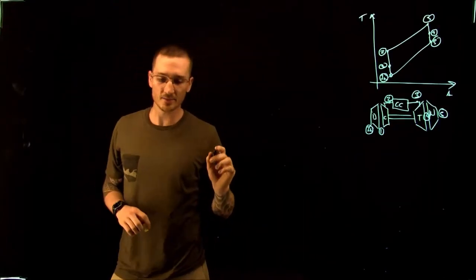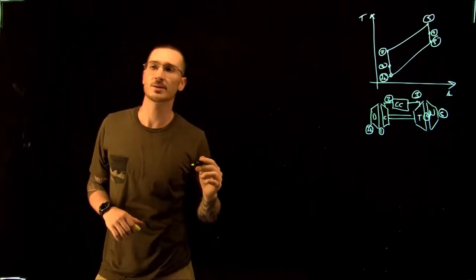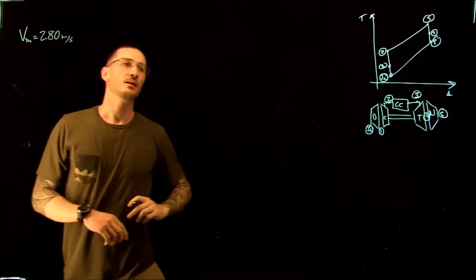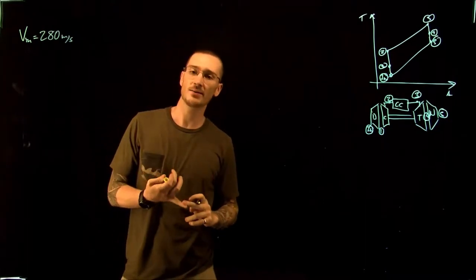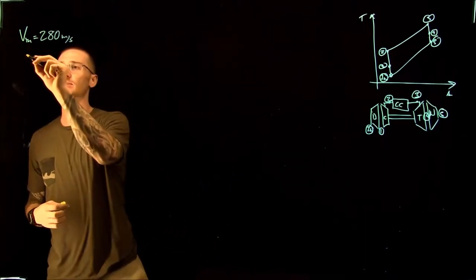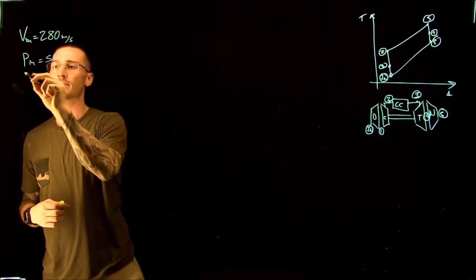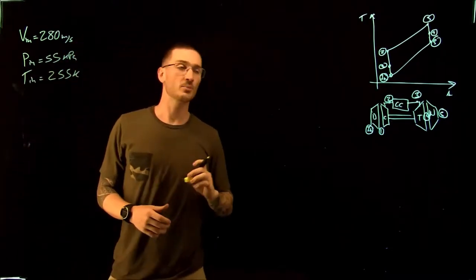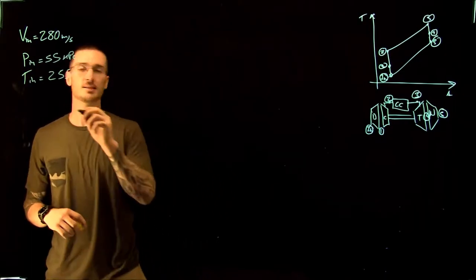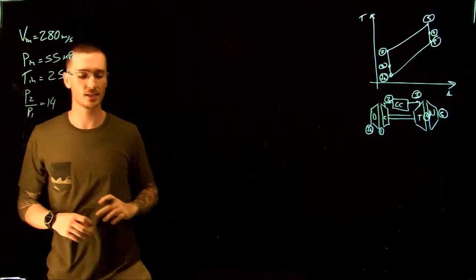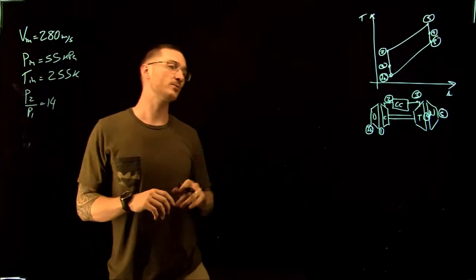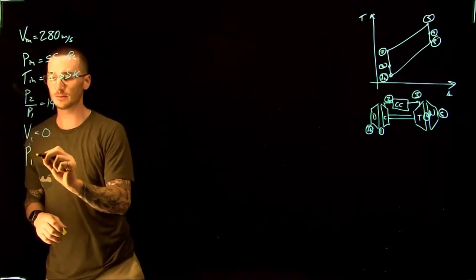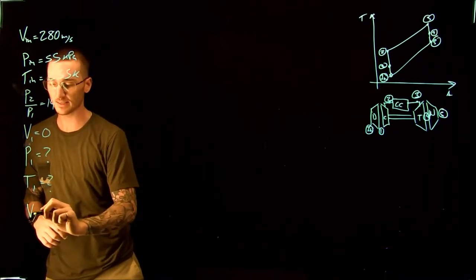Given information: the aircraft velocity is 280 meters per second, so the inlet velocity V_in equals 280 m/s. The pressure at the inlet is 55 kPa, and the temperature at the inlet is 255 Kelvin. The compressor pressure ratio P2 over P1 equals 14. The diffuser brings the relative velocity to zero, so velocity at point 1 equals 0. We need to find the pressure at point 1, the temperature at point 1, and the exit velocity at point 5.